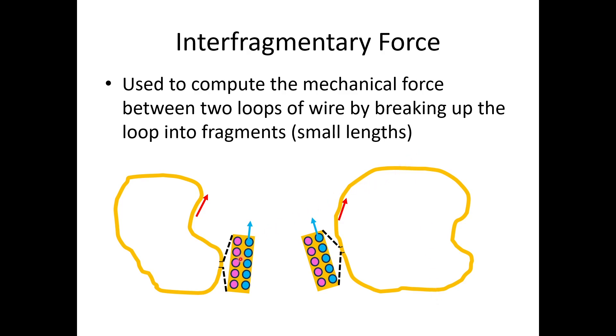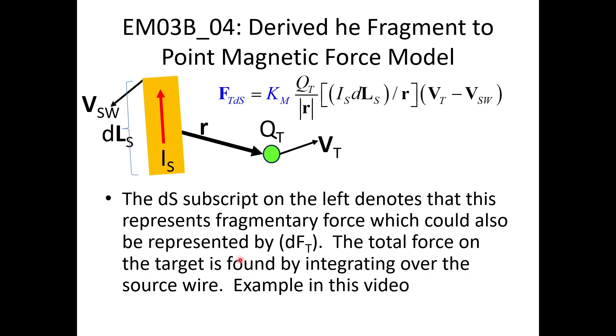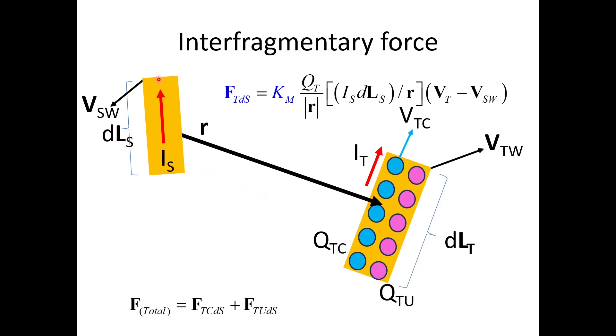A fragment is basically a very small length of wire. In mathematics, it's a differential length of wire. In the last video, we developed the equation for the effects of a fragment of a source loop on a charge somewhere else. We computed the total effects of a source fragment on a target charge somewhere else. In this video, we're going to use that model of the fragment to charge effect to compute the effects of a source fragment on the conduction charges, and then use it again to compute the force on the uncovered or unbalanced charges. Then we're going to sum those to get the total force between two fragments, the interfragmentary force.